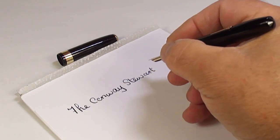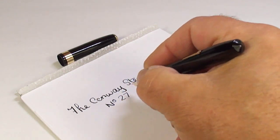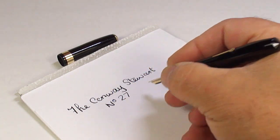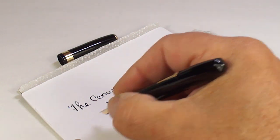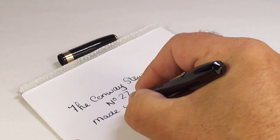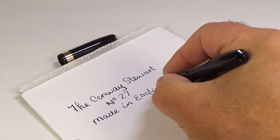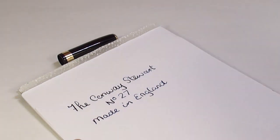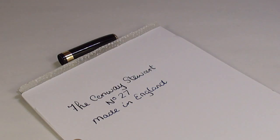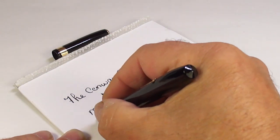So we've got the Conway Stewart, and as we said, in this particular instance the number is on the second line. Made in England. Let's give it another dip. It's writing very nicely.